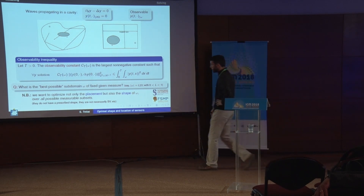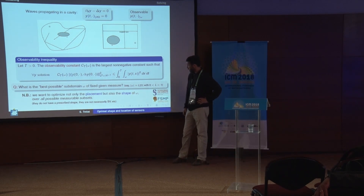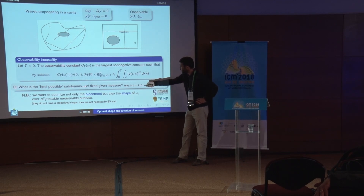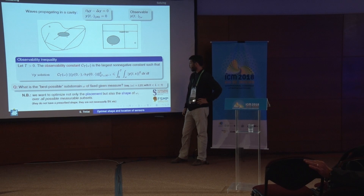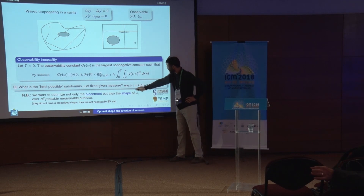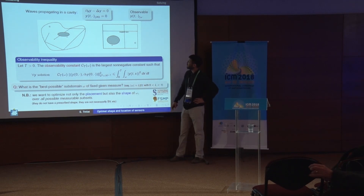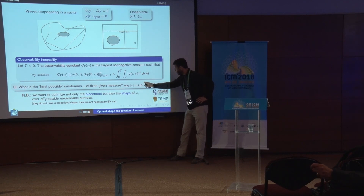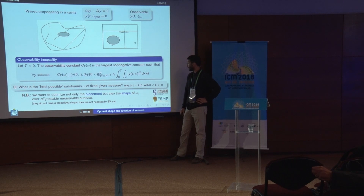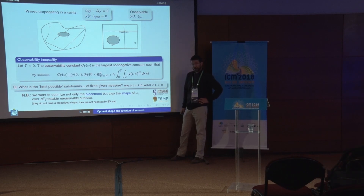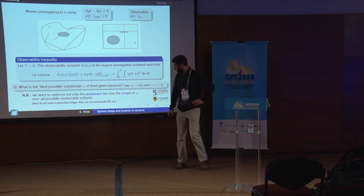The mathematical limitation: we are going to search the best possible subset small omega over all possible subsets of capital omega that are of given Lebesgue measure — capital L times the total Lebesgue measure of capital omega — for some fixed capital L between 0 and 1.